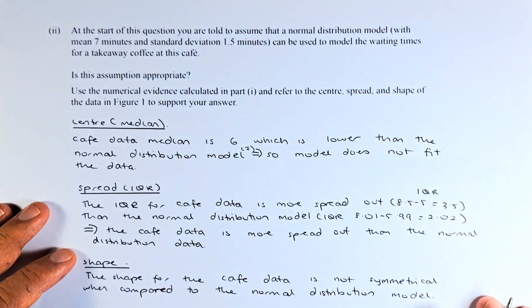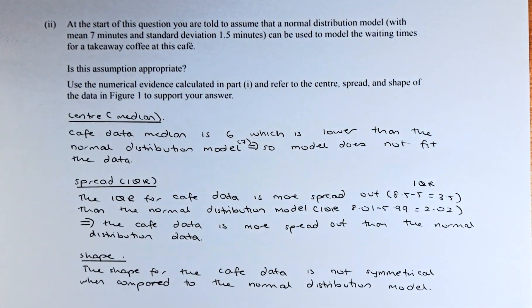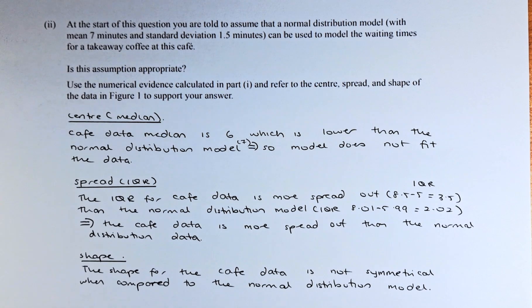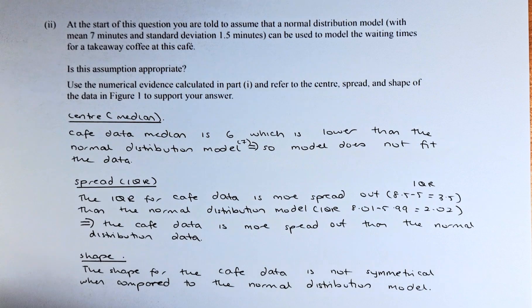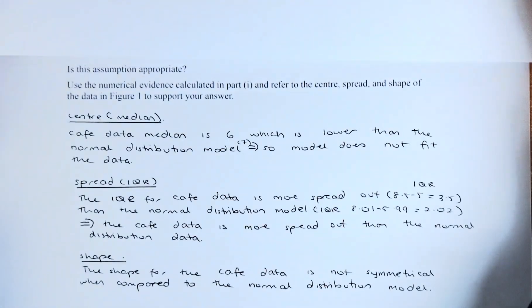We shall read this question. At the start of this question, you are told to assume the normal distribution model can be used to model the waiting time for takeaway coffee at this cafe. So you are comparing between the data from the cafe and the normal distribution. Use numerical evidence calculated in part 1 and refer to the centre, the spread, and shape of the data in a figure to support your answer.